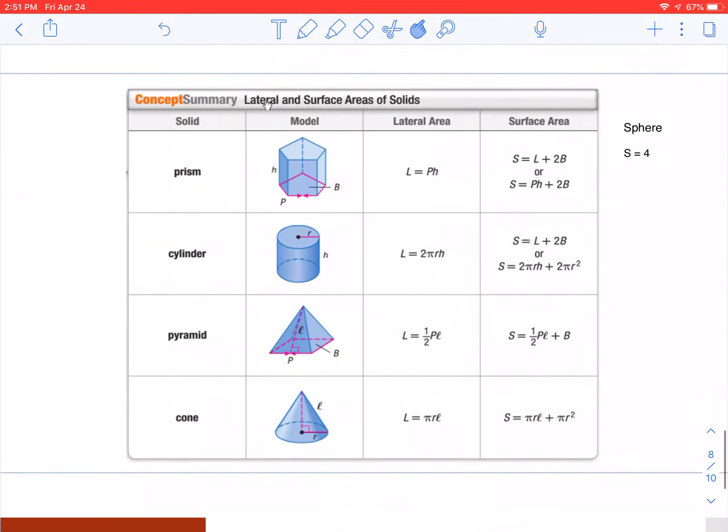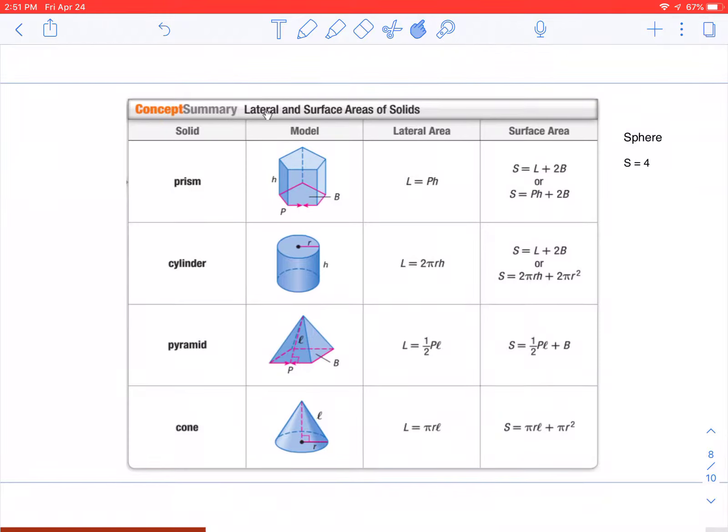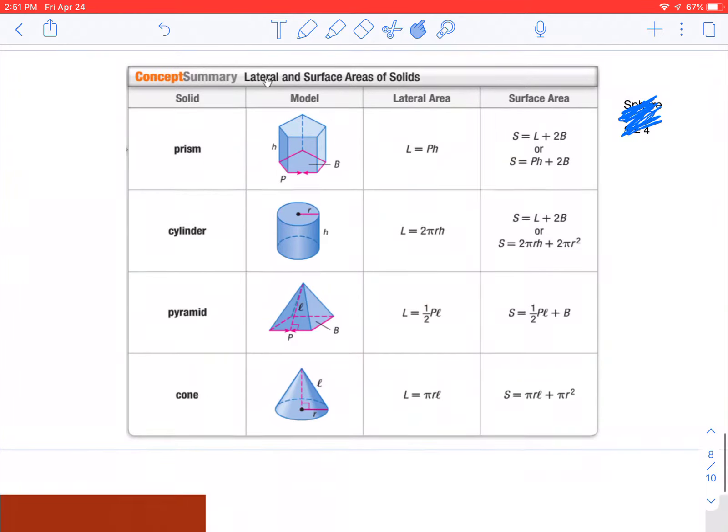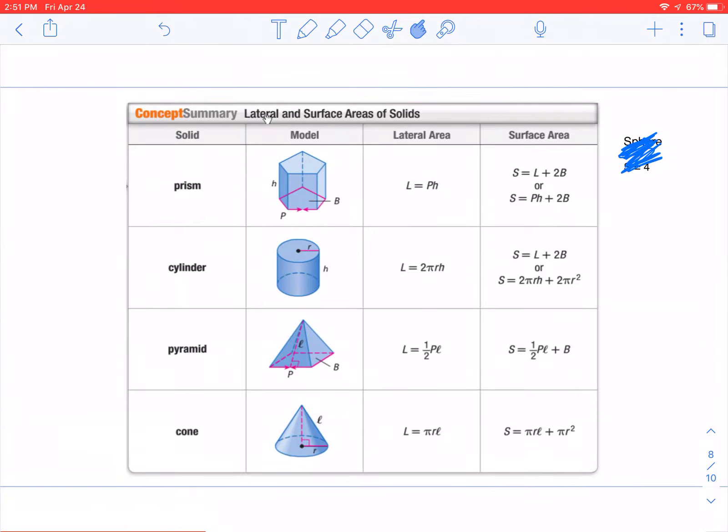Here's a chart if you want to take a screenshot. Lateral area and surface area—all the equations you need are right here. We haven't done sphere yet. That's it for 12-3-B.